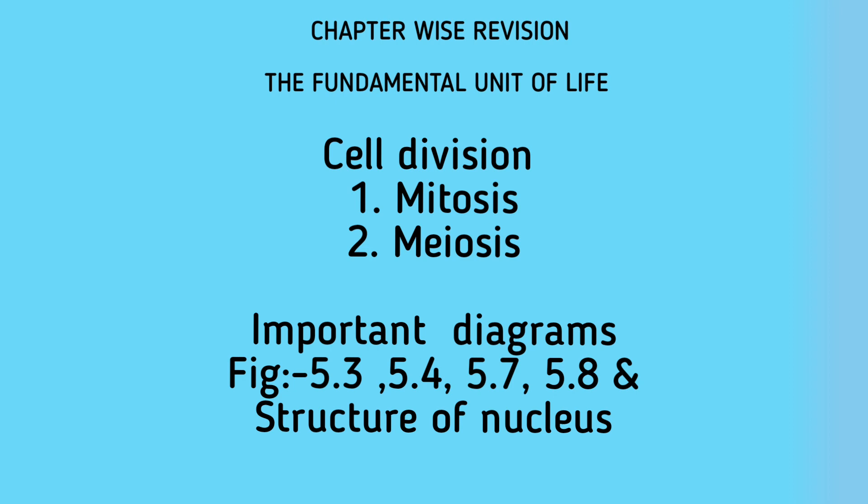The last point discussed in this chapter is cell division — the process by which new cells are made. There are two main types: mitosis and meiosis. Mitosis is used for cell growth and repair of tissues, whereas meiosis is involved in gamete formation. In mitosis, two new daughter cells are formed; in meiosis, four new cells are formed. In mitosis, new cells have the same number of chromosomes as the mother cell, but in meiosis, new cells have half the number of chromosomes.